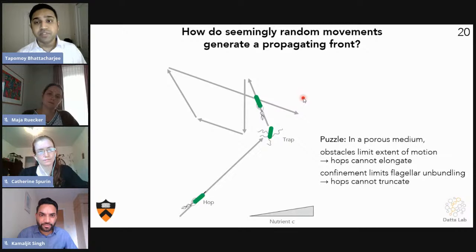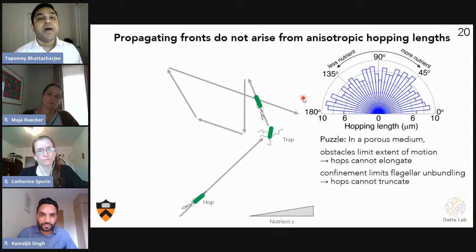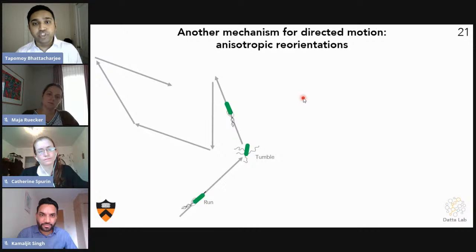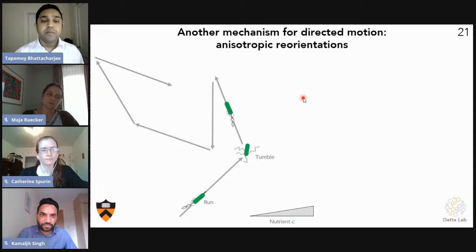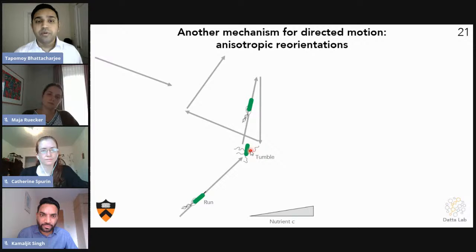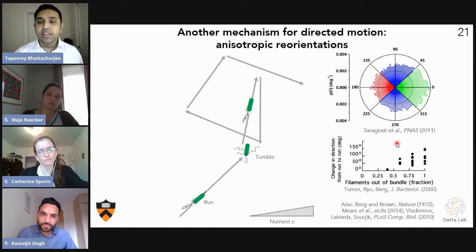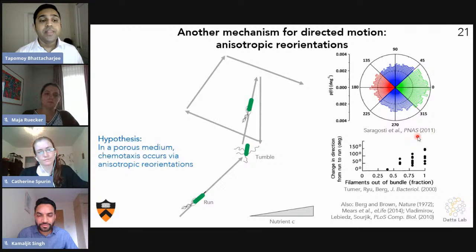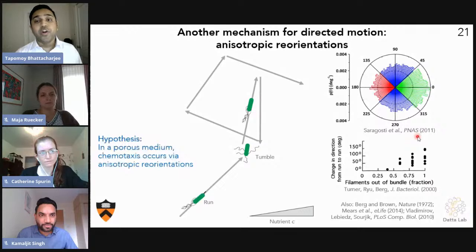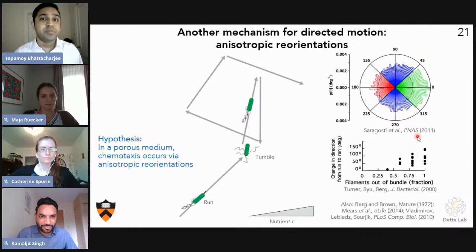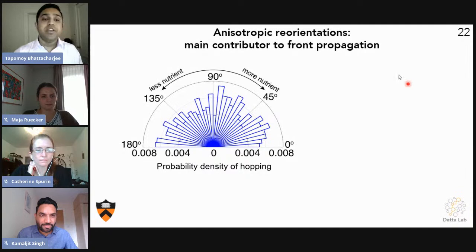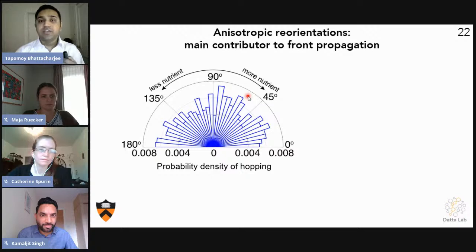You might argue that they can truncate their hops in the opposite direction of the nutrient, and we think that is also not possible because we have found that confinement suppresses flagellar unbundling, so cells cannot stop their hop halfway through. To verify this, we have tracked individual cells at the leading edge of these propagating waves, measured their hop lengths, and we found no directional bias of the hop length. So how are these cells actually chemotaxing? There exists another mechanism by which E. coli cells can chemotax in homogeneous liquid material. They can move towards the more nutrient-rich zone by biasing their reorientation amplitude. So when they reorient, they reorient more towards the nutrient-rich zone.